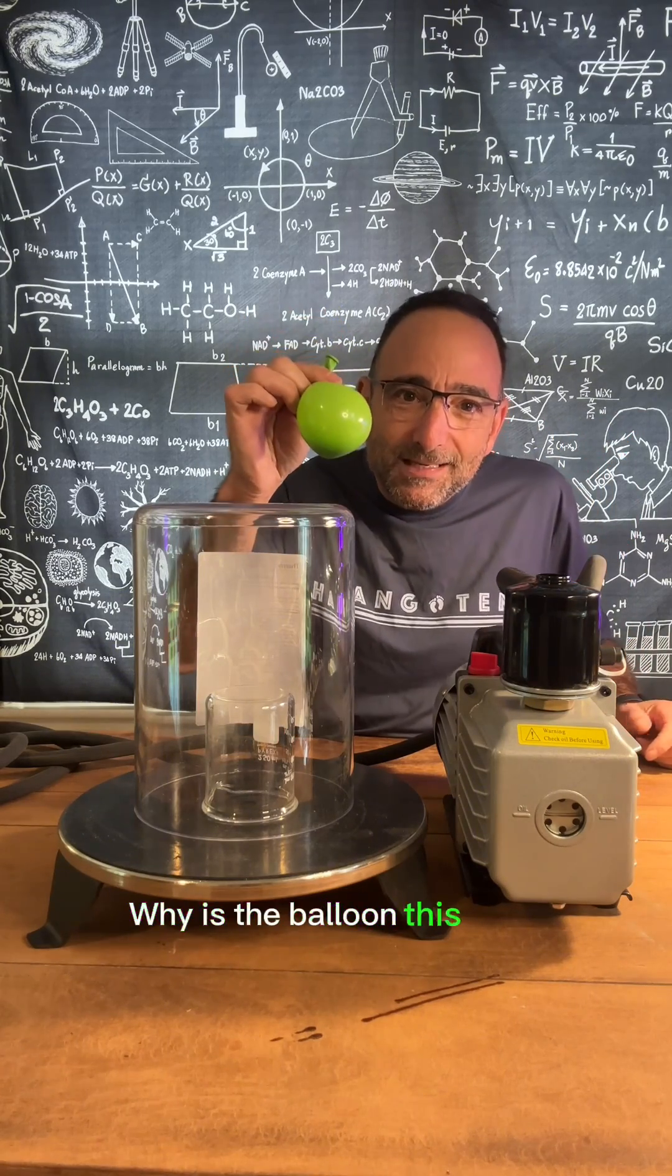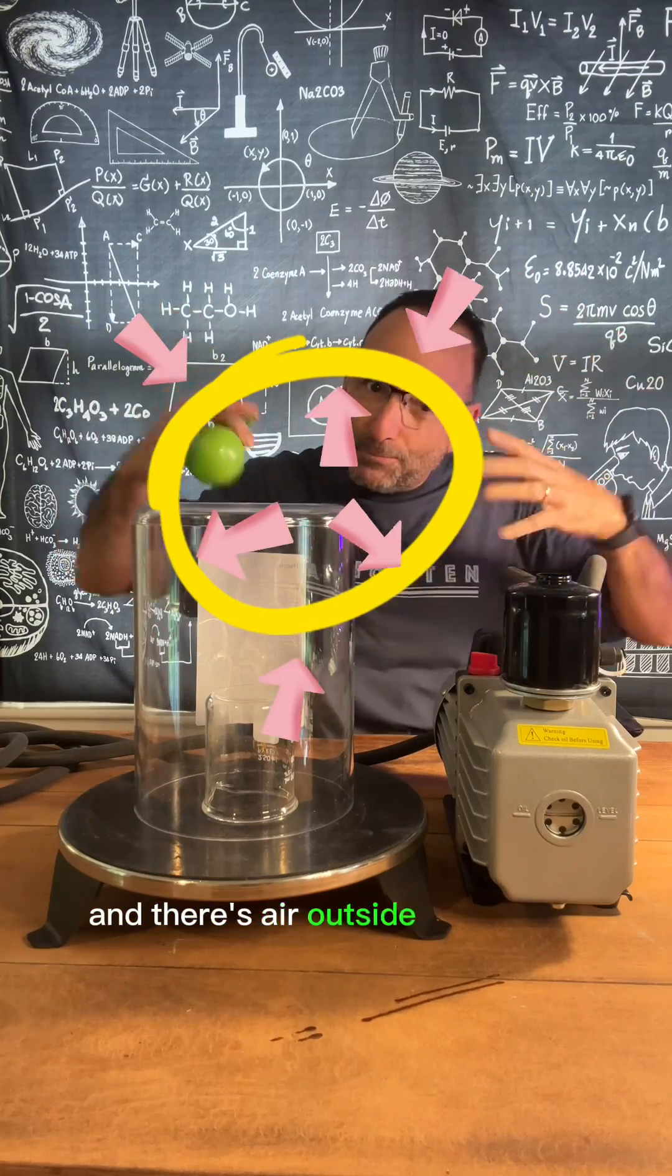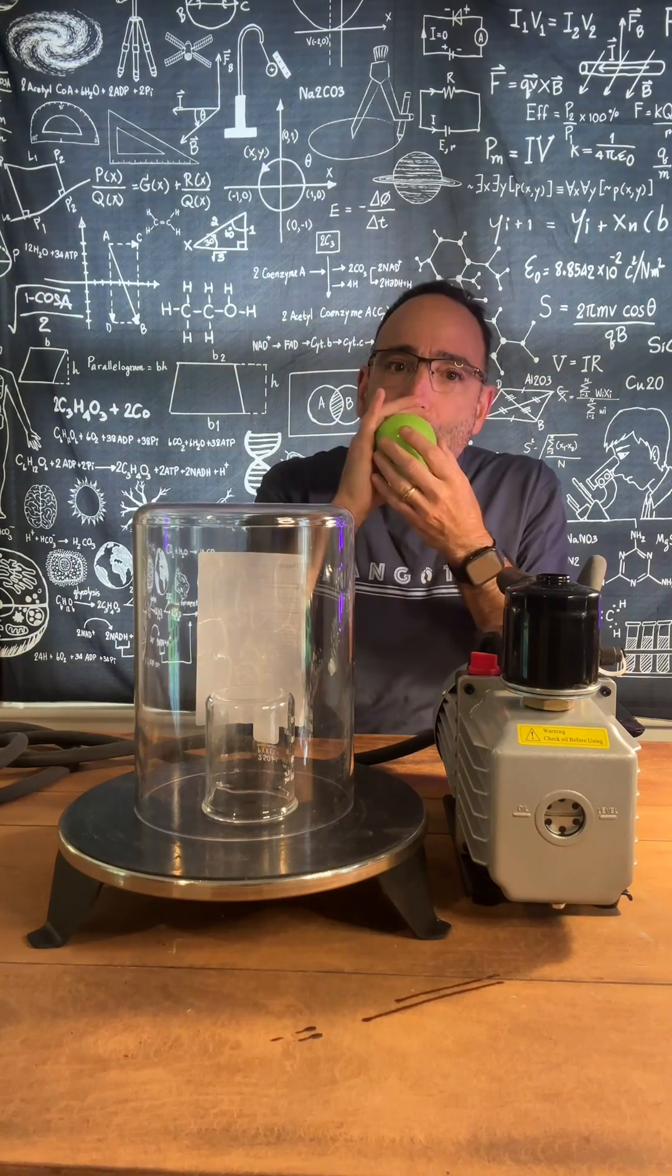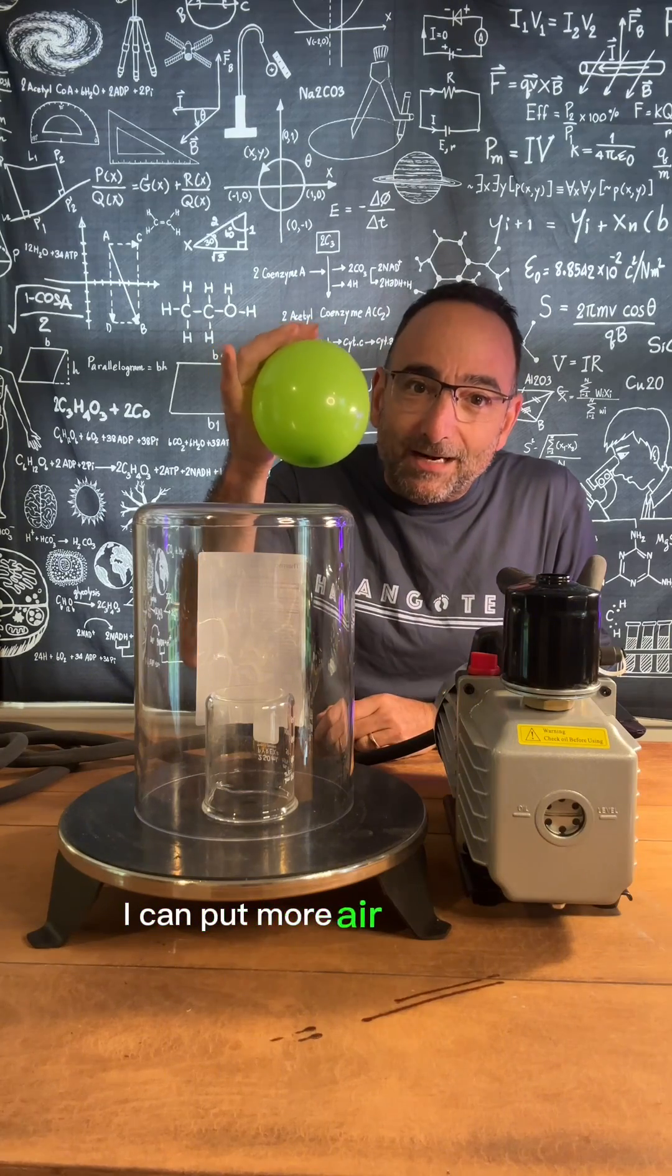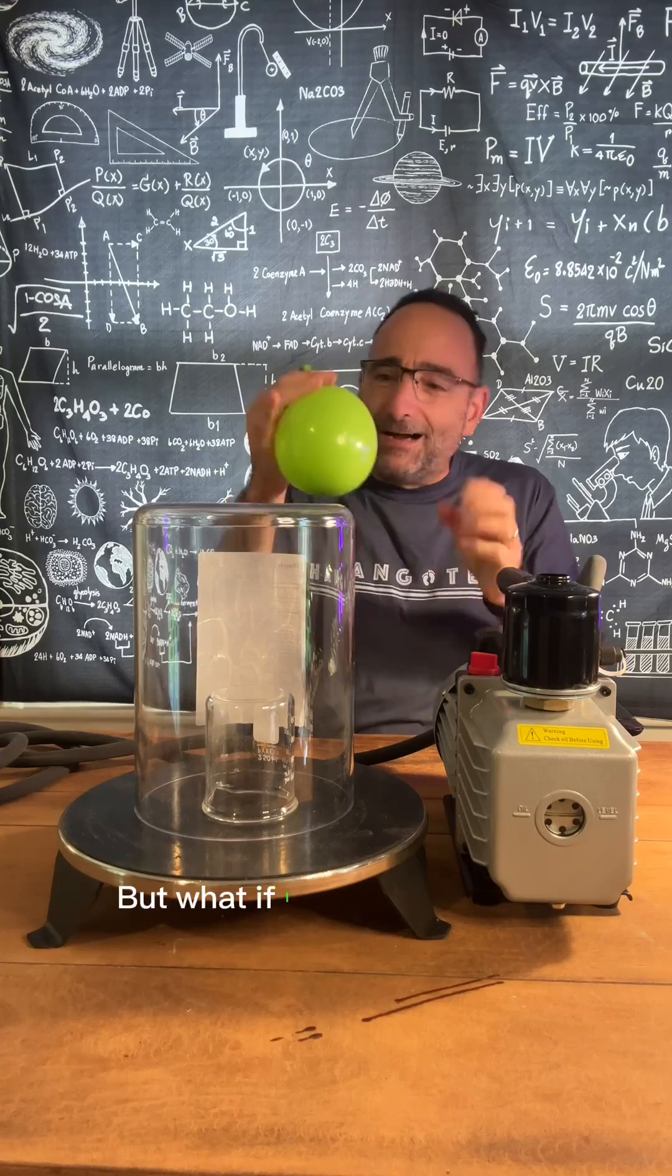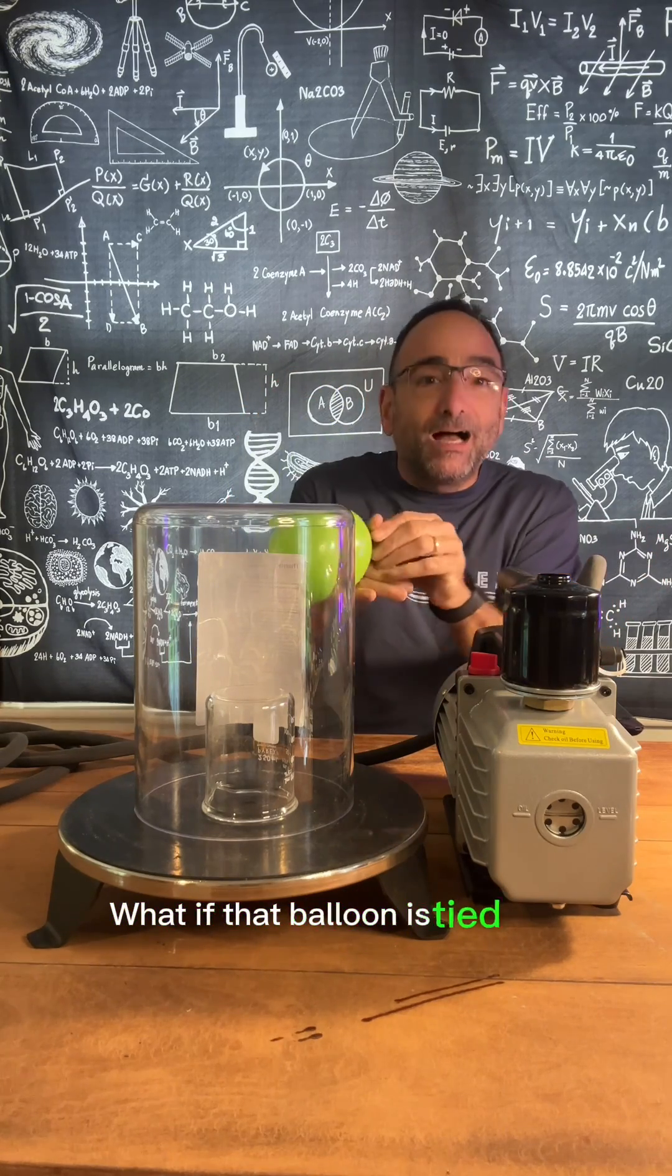Here's a balloon. Why is a balloon this size? Because there's air inside pushing out, and there's air outside pushing in. If I want this balloon to get bigger, I can put more air inside of it. So now there's more air pushing out. But what if I can't get into the balloon? What if that balloon is tied off?